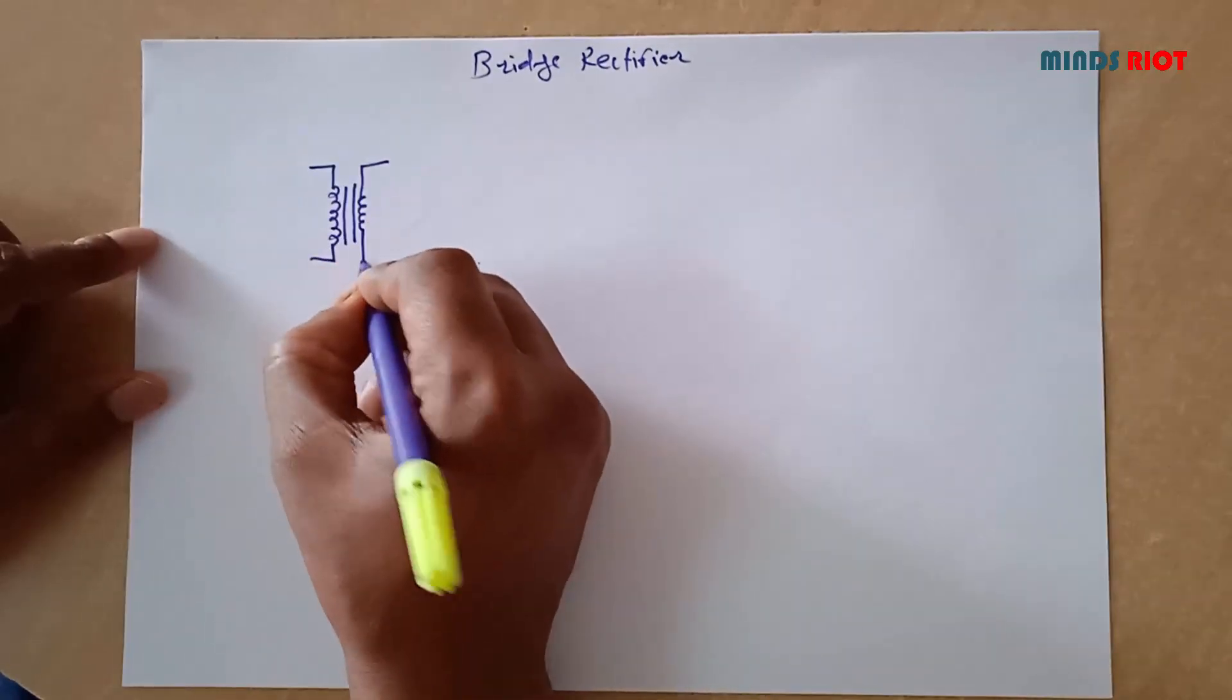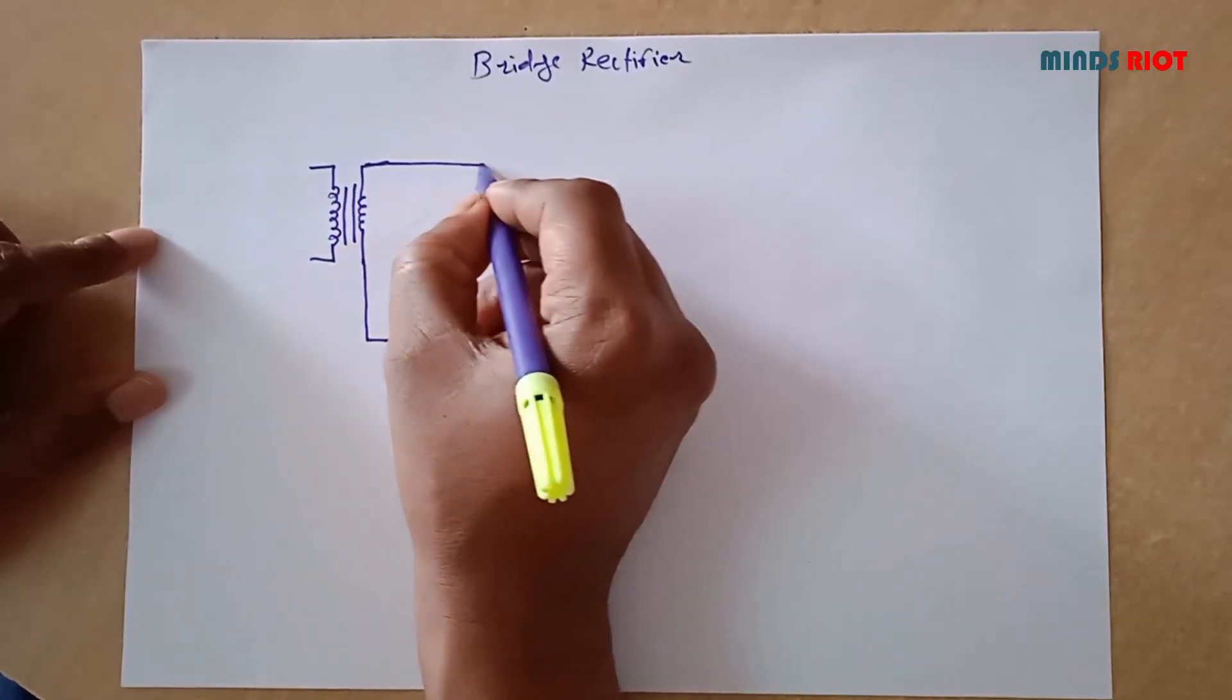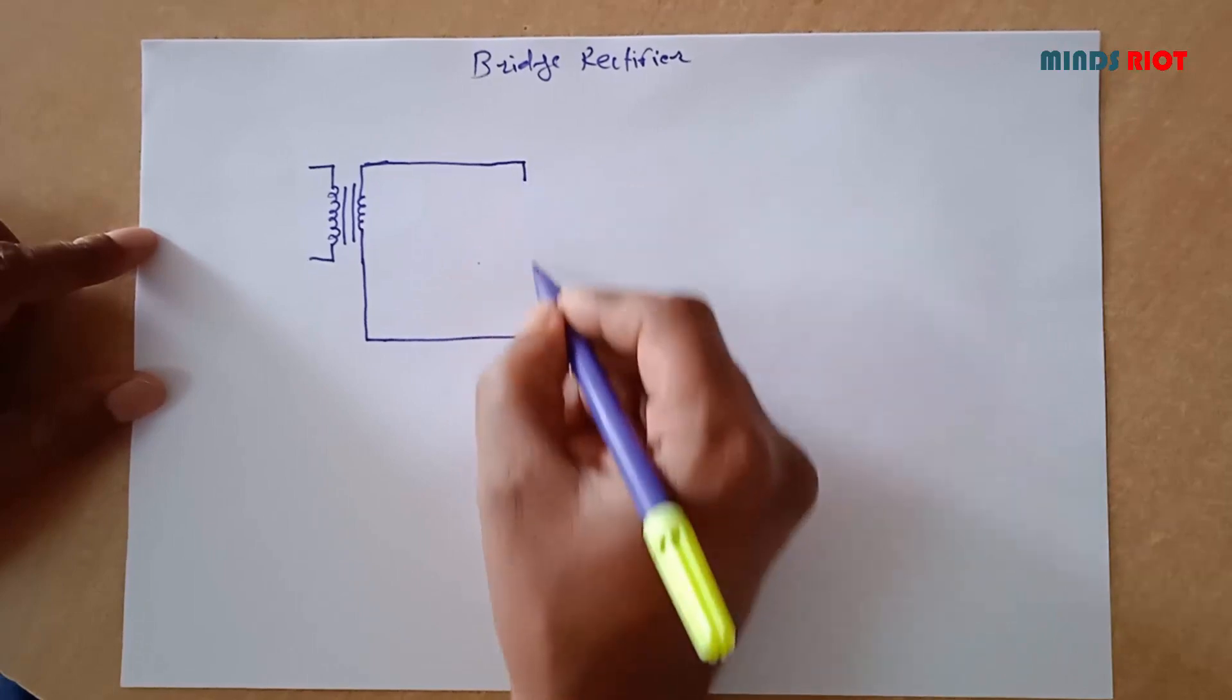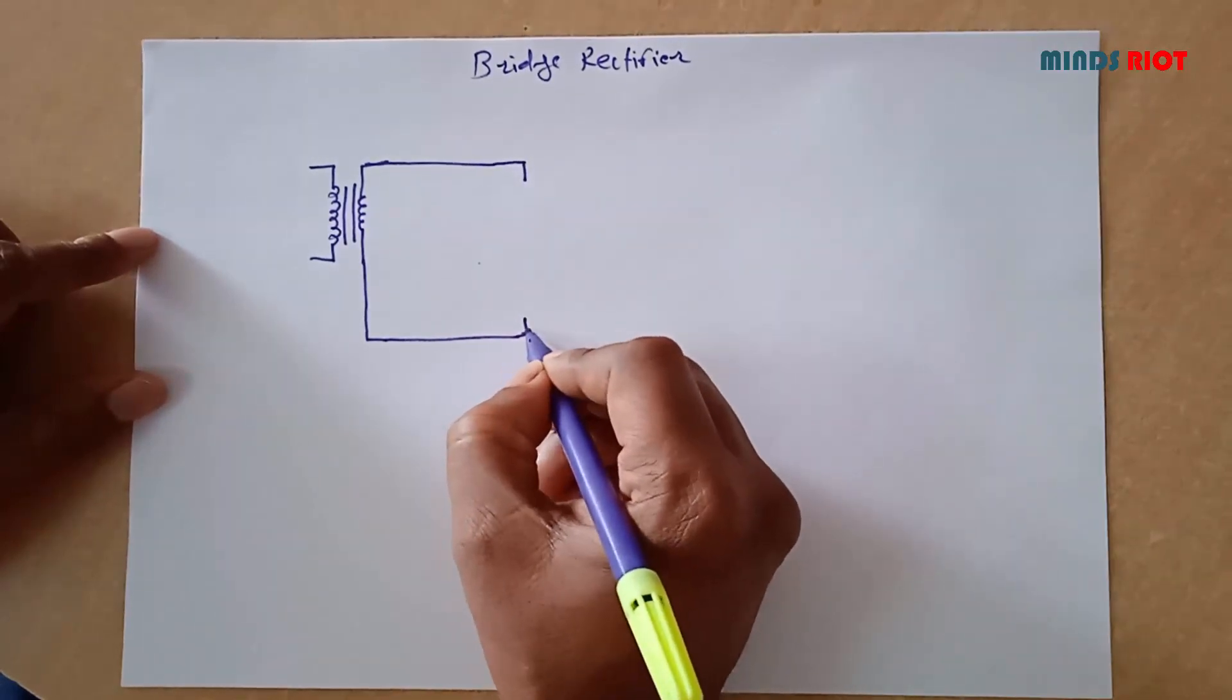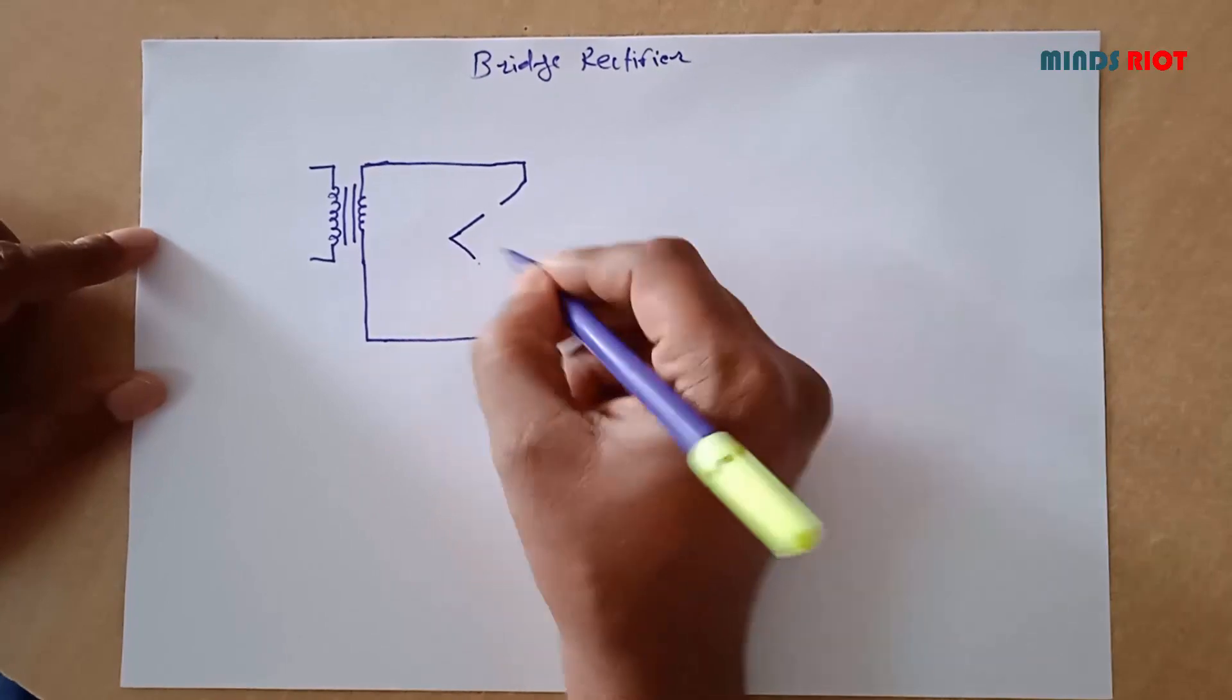Bridge rectifier is a type of full rectifier which converts AC into DC. Now this is the conventional diagram of bridge rectifier which we can see in reference books or textbooks. It consists of 4 diodes.